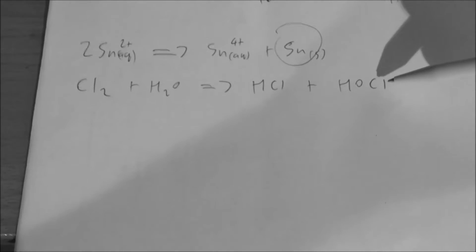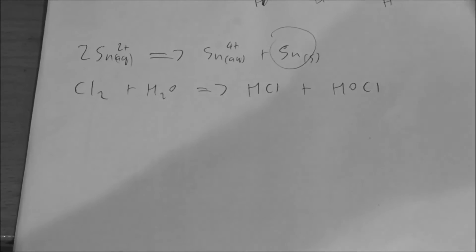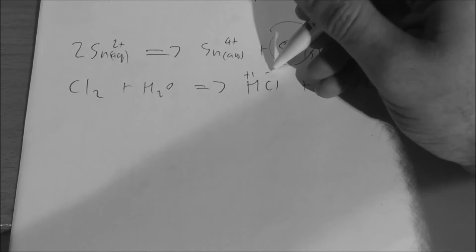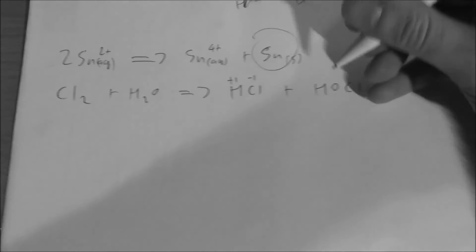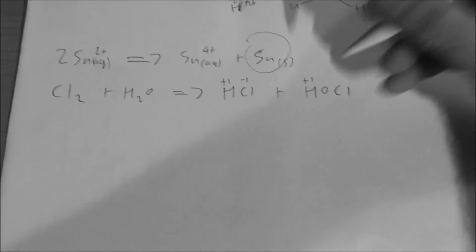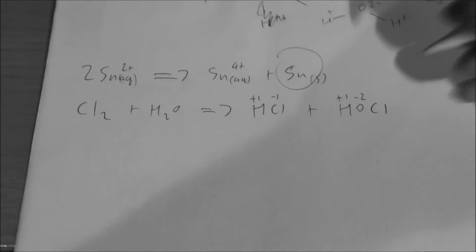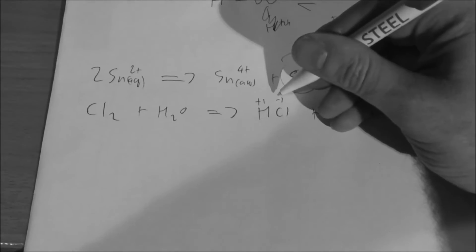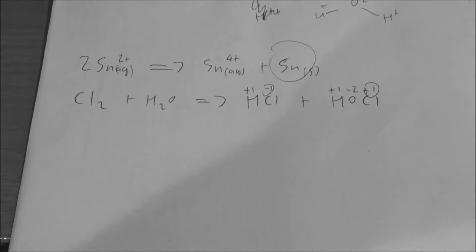And this is hypochlorous acid, which is the conjugate acid of bleach, or sodium hypochlorite. So what we've got here is plus one, minus one on that. And then we've got plus one, minus two on the oxygen. Which means that this chlorine has to be plus one. So the chlorine has been both oxidized and reduced.